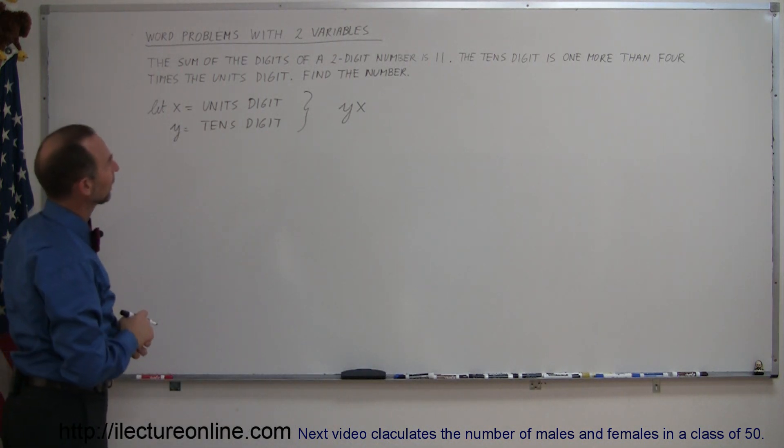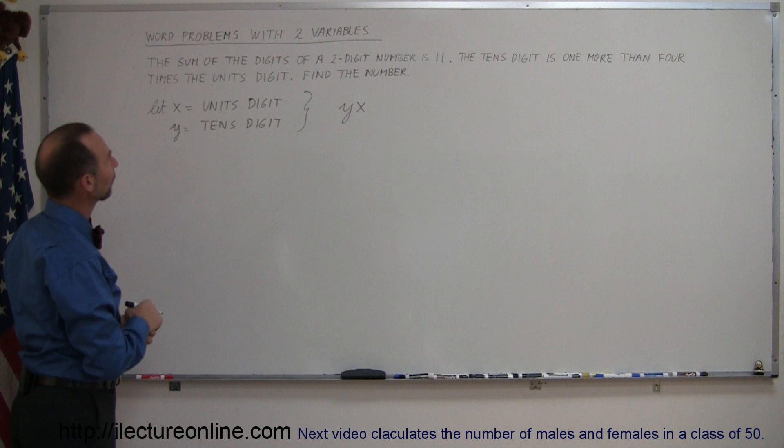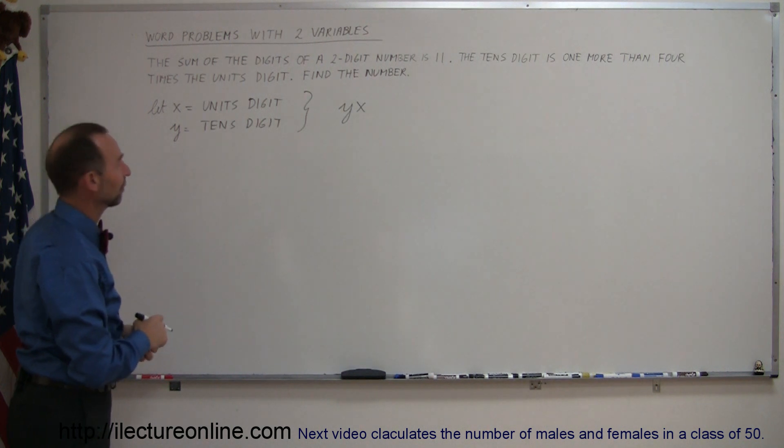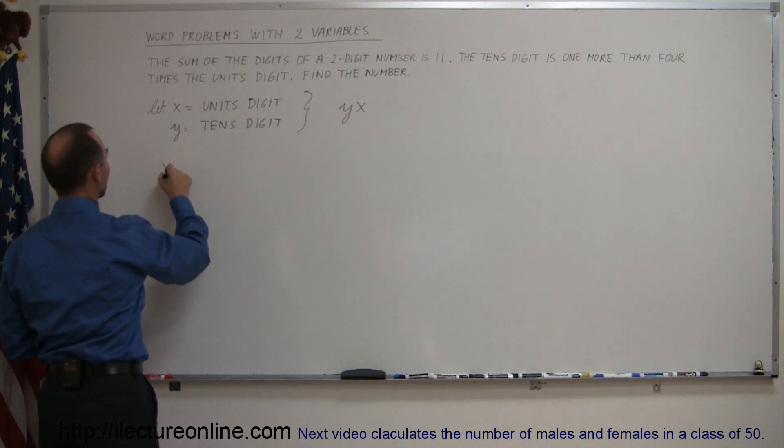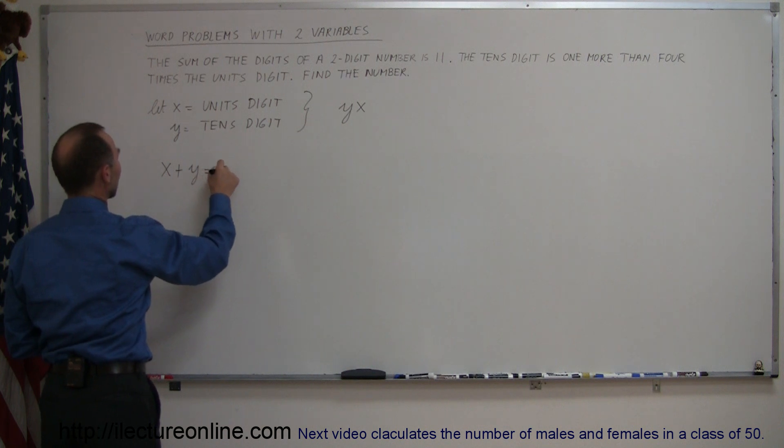And then they tell us the following. It says that the sum of the digits of the two-digit number is 11, which means that x plus y equals 11.